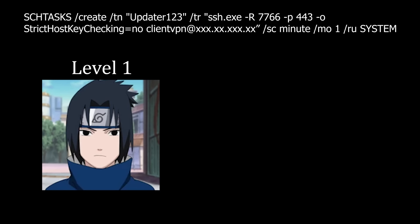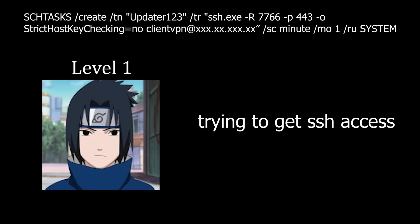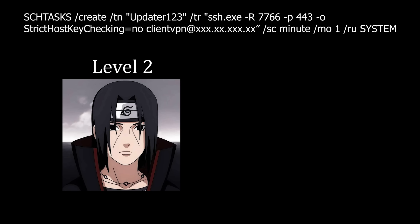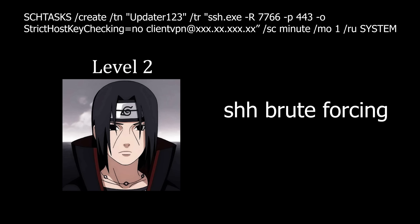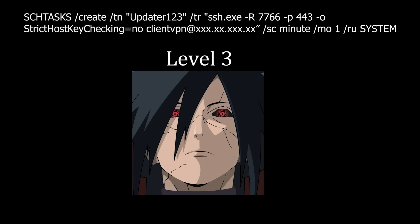On a complex SSH command: Level 1 says it seems like a malicious script trying to get SSH access into a specific IP, possibly running multiple instances. Level 2 thinks it's using SSH to brute force a client VPN, or using a client VPN root login to brute force that IP, and notes it's persistent so it keeps trying on restart. The senior analyst clarifies: it's creating a scheduled task called updater123 that runs over SSH on the attacker's side on port 7766, with outbound connection over port 443. It disables strict host key checking to make the connection more persistent, and the attacker infrastructure is the attacker VPN at that IP.